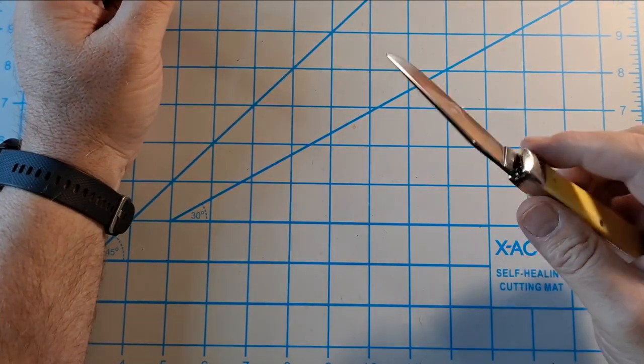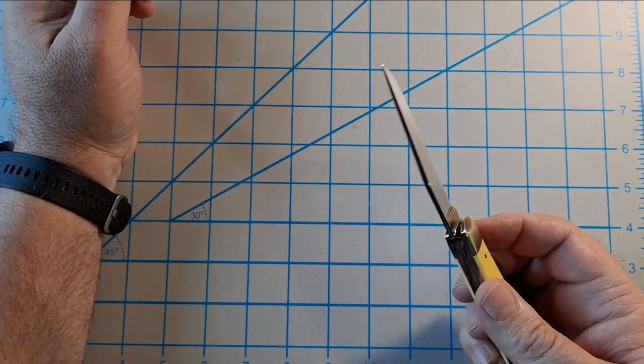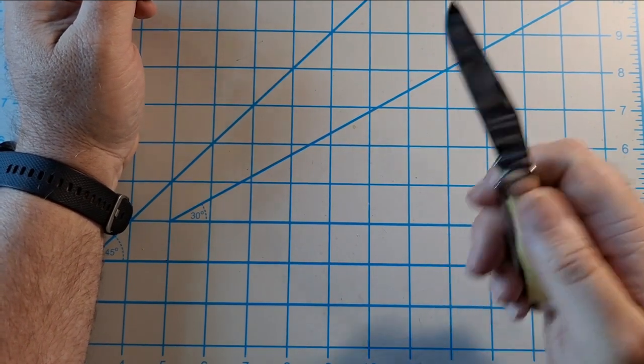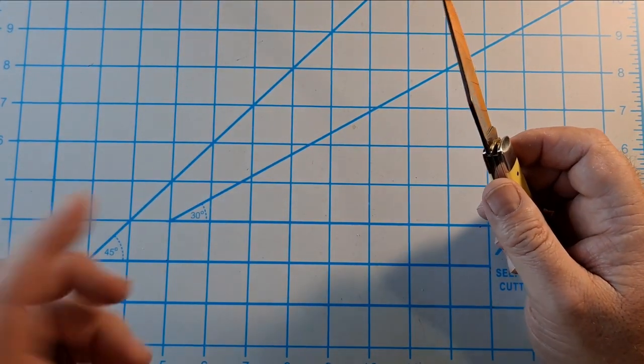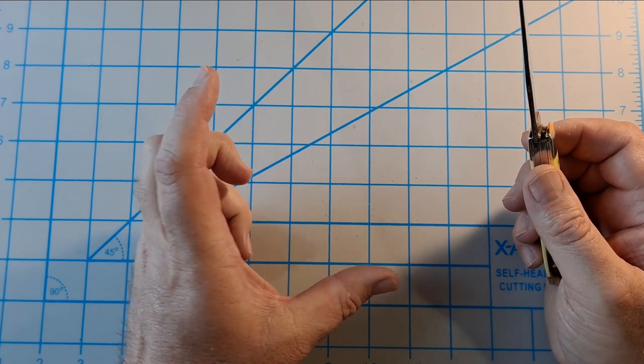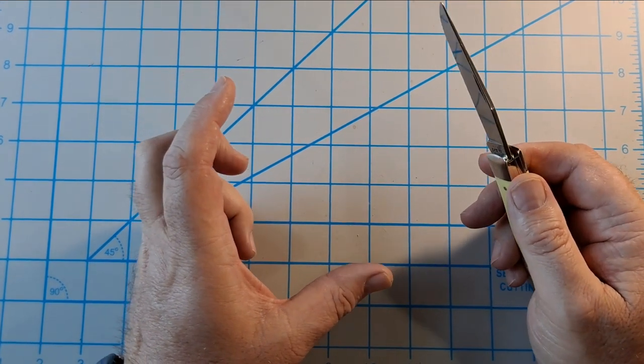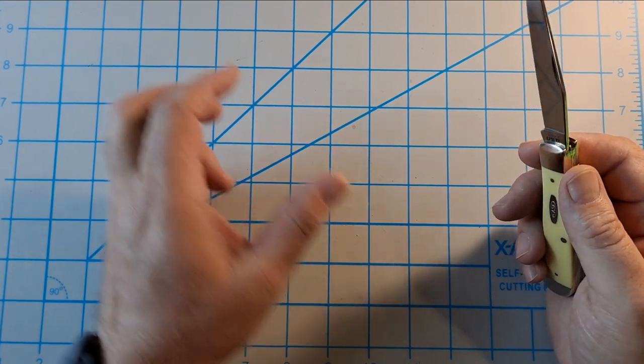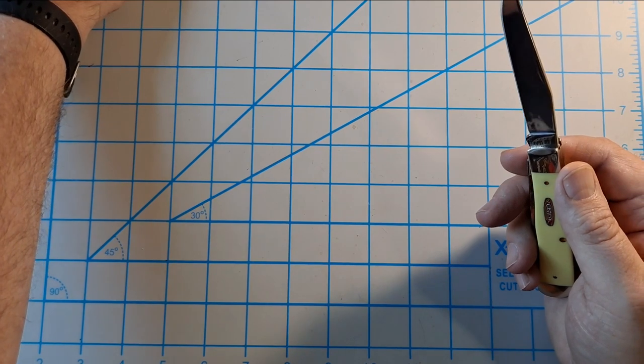she honed it on a ceramic rod, stropped it, and put a little oil in the pivot, worked the junk out. So, I don't have a little ceramic rod like she did. I'm going to buy one, because that looks a lot easier to use.